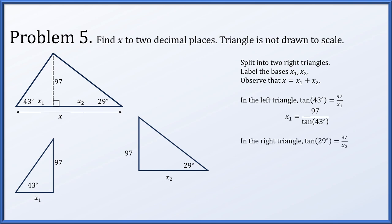Similarly in the right triangle, the tangent of 29 degrees is 97 over x2, which we can solve for x2 being 97 over the tangent of 29 degrees. Therefore, x, what we are trying to solve for, is x1 plus x2, which is 97 over the tangent of 43 degrees plus 97 over the tangent of 29 degrees, which is approximately 279.01.